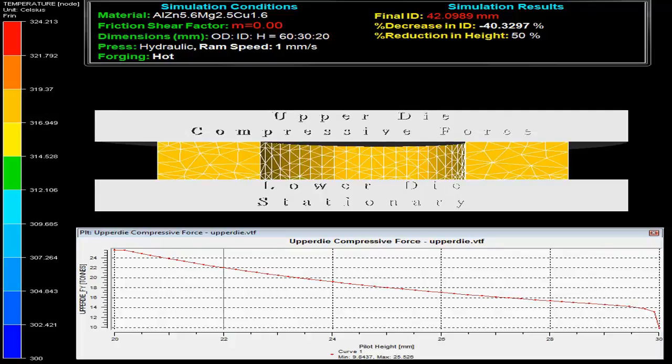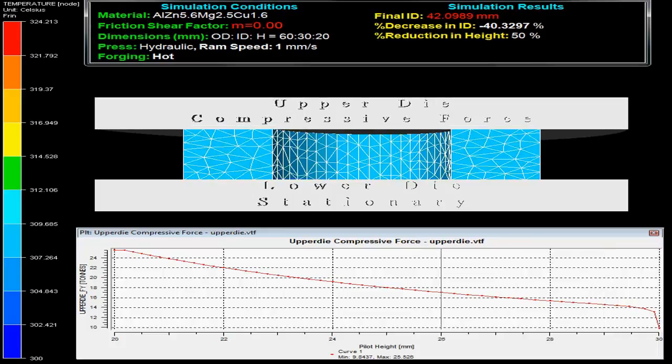The press used is hydraulic press with ram speed 1 mm per second and forging is done hot.